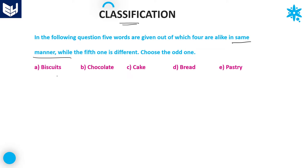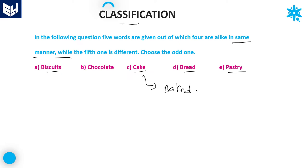The first question options are: Option A — biscuits, Option B — chocolate, Option C — cake, Option D — bread, and Option E — pastry. If you look at all the options carefully, biscuits, cake, bread, and pastry are all baked items.